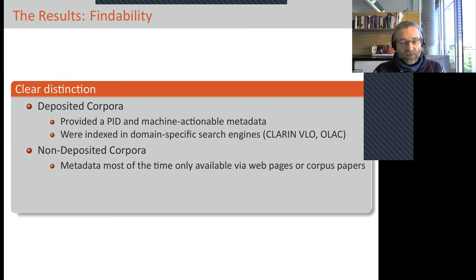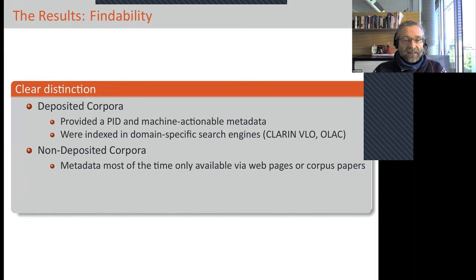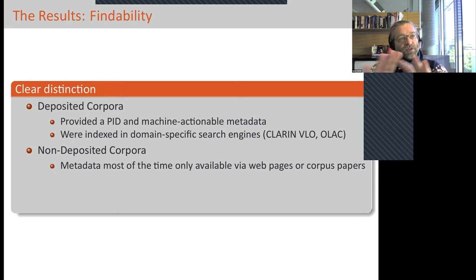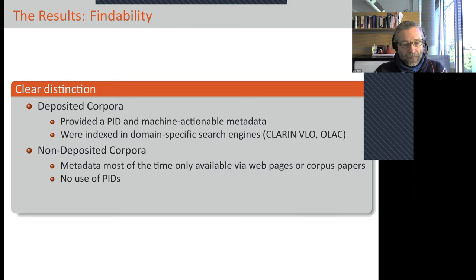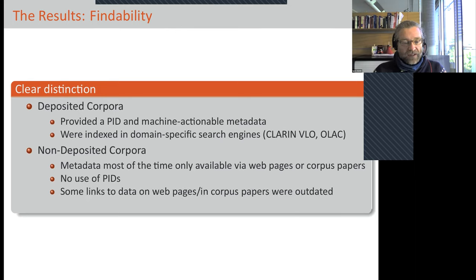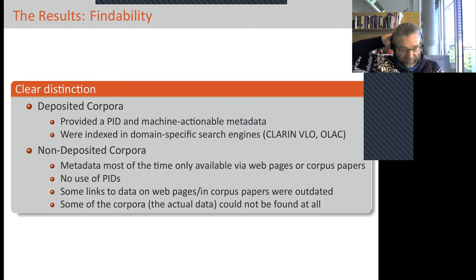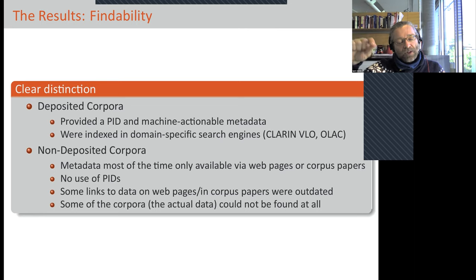Non-deposited corpora had the problem that metadata was most often only available via web pages — written in clear text but computers had a difficult time determining what type the data was, what language it was in, or what the size was. Search engines allowing you to filter by language or corpus type wouldn't work because they didn't have this metadata. Often there was no persistent identifier, and some corpora were not available anymore — either the web page hosting the corpus was gone, or even the web page itself had disappeared.